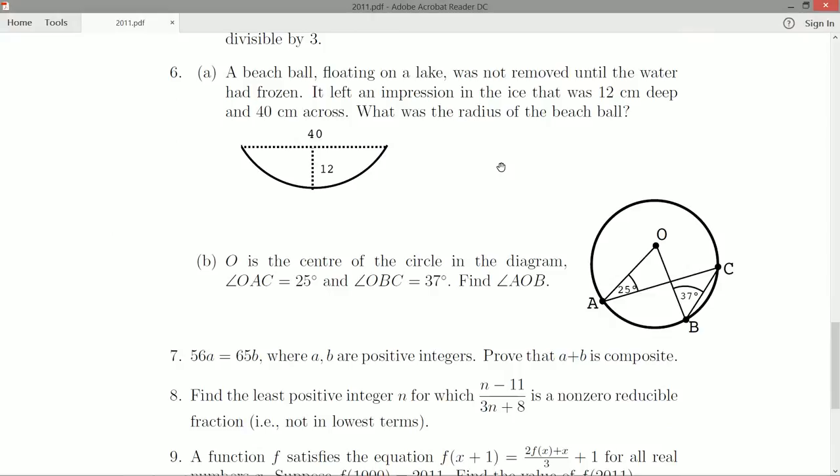Okay. So now B part. O is the center of the circle in the diagram. OAC is 25 degrees. And OBC is 37 degrees. Find angle AOB. Okay.